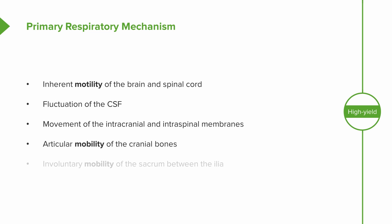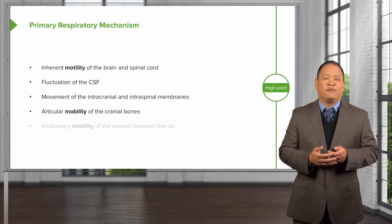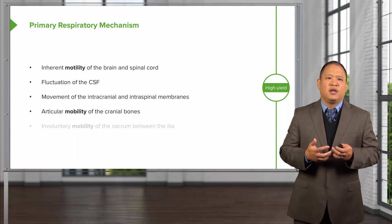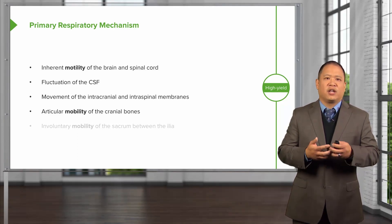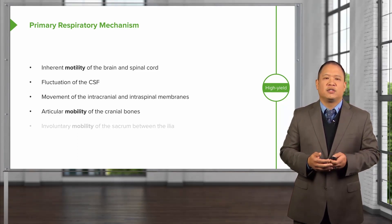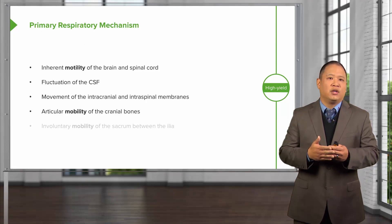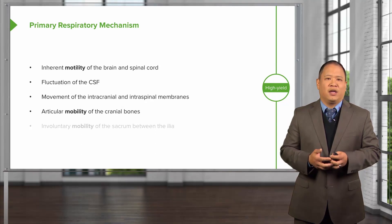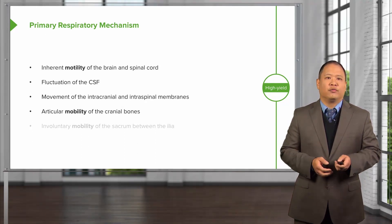There's articular mobility of the cranial bones. The cranial bones themselves have motion and movement. Based on the different types of sutures and attachments, there might be more of a hinge-like motion with serrated sutures or more of a gliding motion with squamous sutures. The cranial bones have an innate ability to articulate and move.